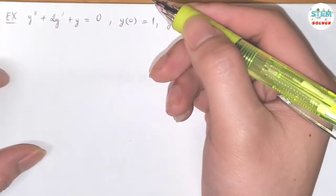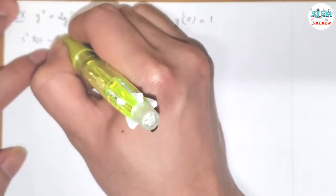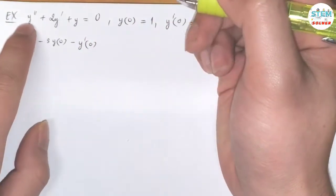By following the transform of a derivative theorem, we have s squared times capital Y of s minus s times y of 0 minus y prime of 0. That is for y double prime.